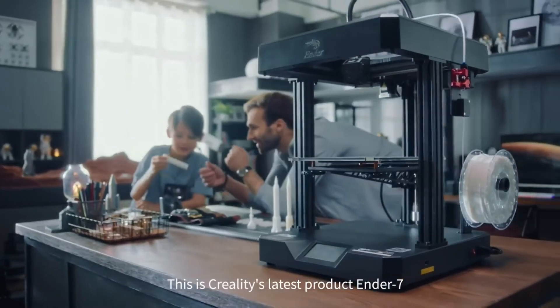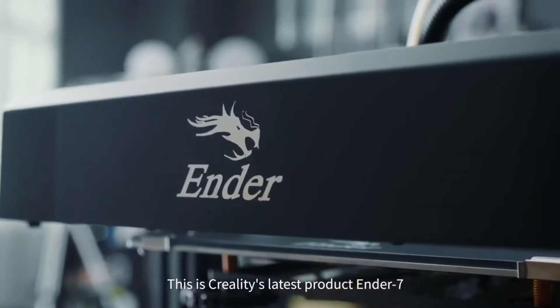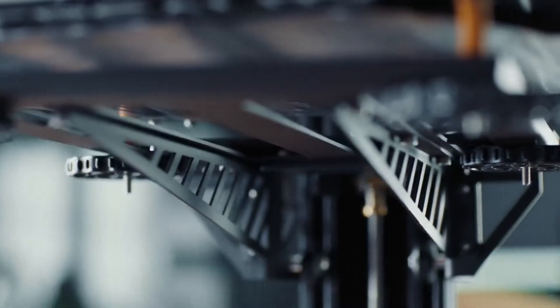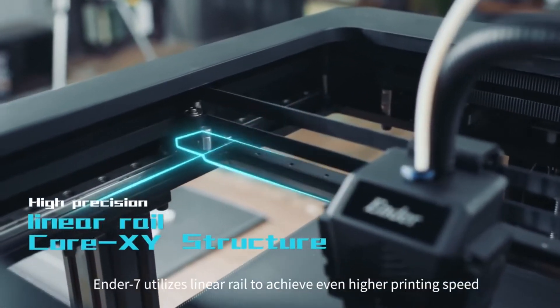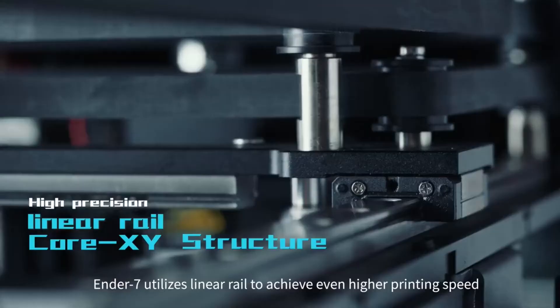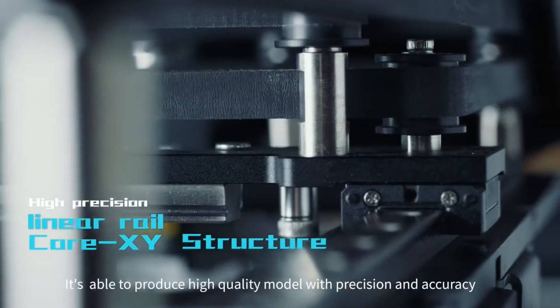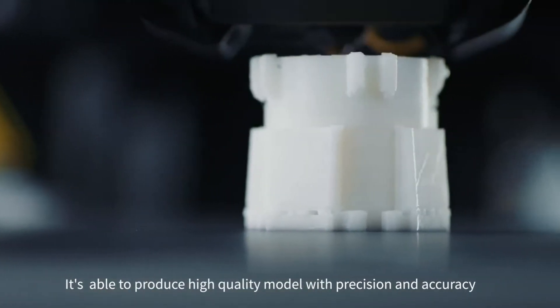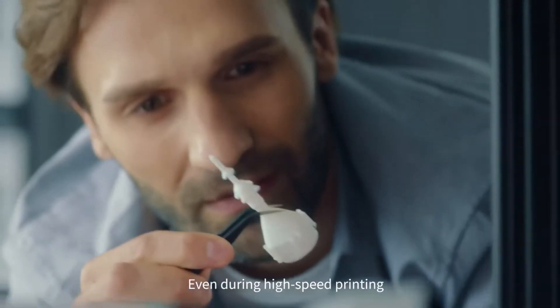This is Creality's greatest product, Ender 7. In addition to core XY structure, Ender 7 utilizes linear rail to achieve even higher printing speed. It's able to produce high quality models with precision and accuracy even during high speed printing.